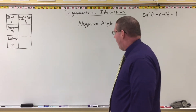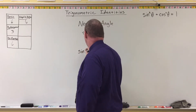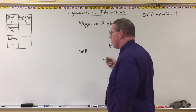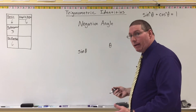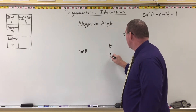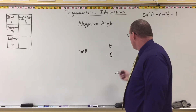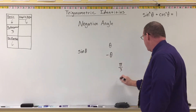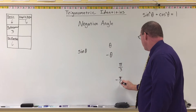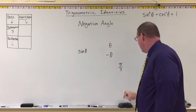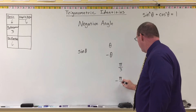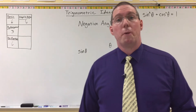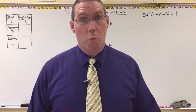What is a negative angle? Well, we've been doing things like: what is sine of theta? If theta is an angle, its negative angle is negative theta. So if theta is pi over three, then negative theta is negative pi over three. To get a negative angle, you just simply multiply the angle by negative one.